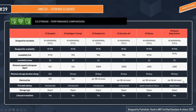Other than S3 Standard and Intelligent Tiering, all other storage classes have a per-GB retrieval fee. For first-byte latency, Standard, Intelligent Tiering, Standard IA, and One Zone IA are all milliseconds, while Glacier can take several minutes to hours, and Glacier Deep Archive will take more than one hour. All storage types are object-based and support lifecycle transitions.